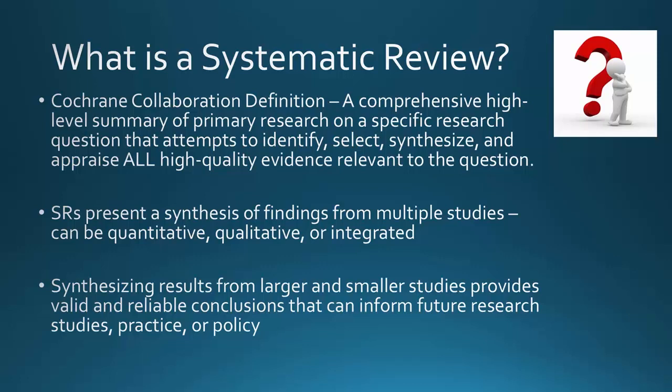The Cochrane Collaboration is well known for amassing very rigorous systematic reviews, and this is their definition. It's a high-level summary of primary research reports. You're going to try to select, identify, and synthesize the findings from all of the high-quality studies or evidence on the topic you're studying. Your question drives the research, but in a systematic review, the expectation is that you're finding all of the evidence. From a systematic review, you get a synthesis from multiple studies.